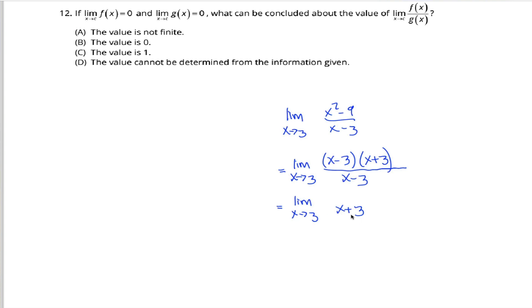It's just asking you the question, what does x plus 3 get really close to when x gets really close to 3? Well, it would get really close to 3 plus 3. In other words, 6. The limit as x approaches 3 of x squared minus 9 over x minus 3 is equal to 6.